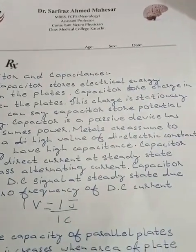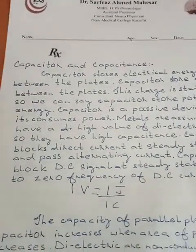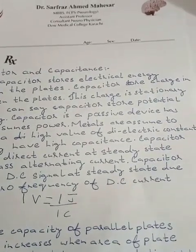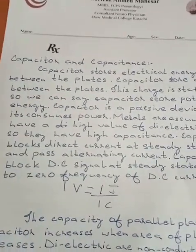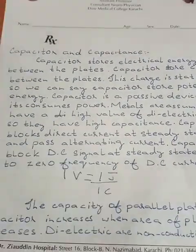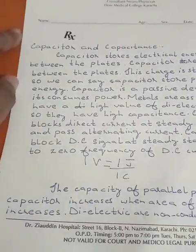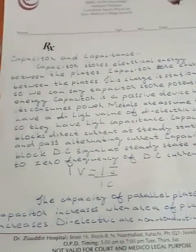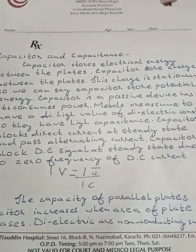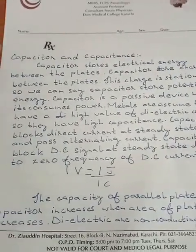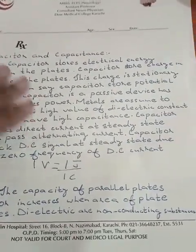Capacitors block direct current at steady state and pass alternating current. Capacitors block DC signal at steady state due to the zero frequency of DC signal. The capacitance of a parallel plate capacitor is increased when the area of the plate increases. Dielectric materials are non-conducting substances.